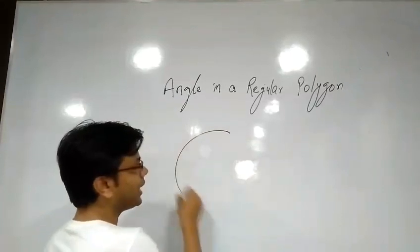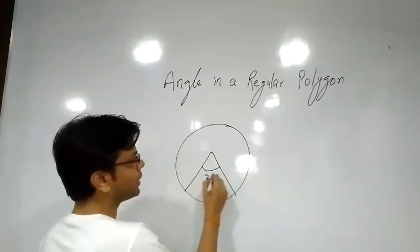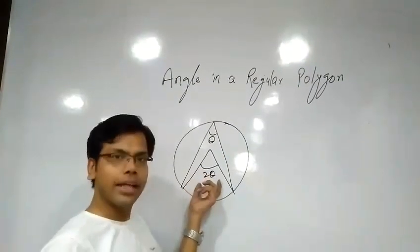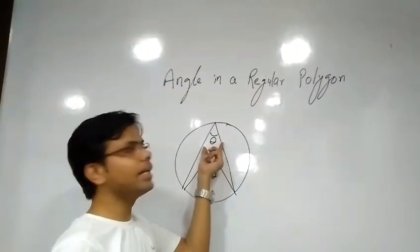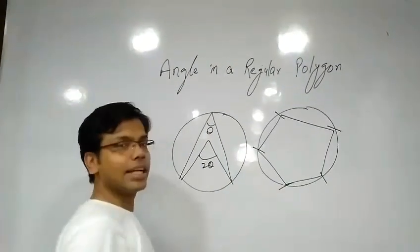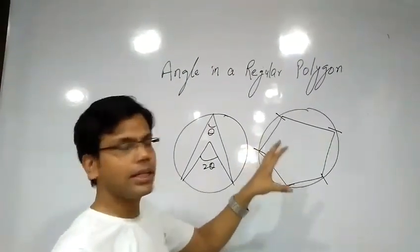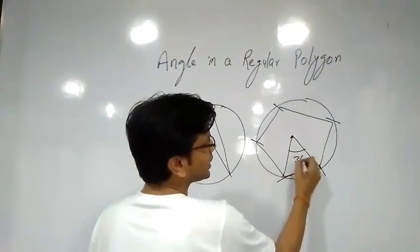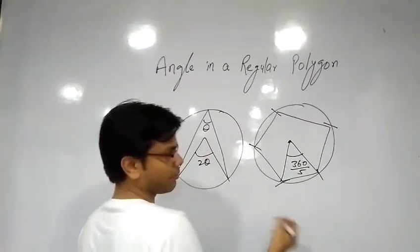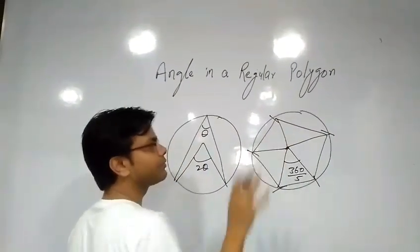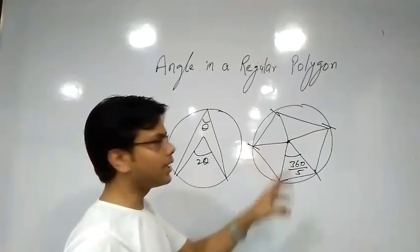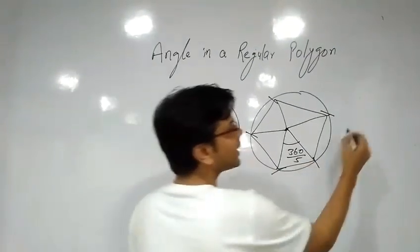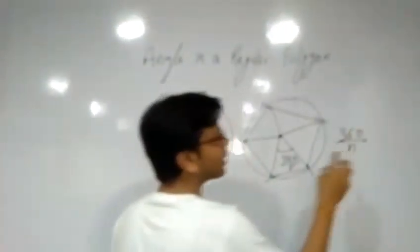One is: if we have a circle and our center angle is 2-theta, then the perimeter angle is theta. Means if you have a center angle which is 2-theta, then the perimeter angle is just half. The second concept is about polygons. If you have a polygon, say a pentagon, then the center angle is nothing but 360 divided by the number of sides. Because at the center we get 5 angles for a pentagon, so one center angle is 360 upon 5. If you have an n-sided figure, then the center angle is 360 upon n.